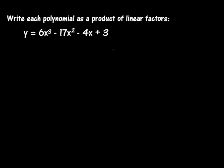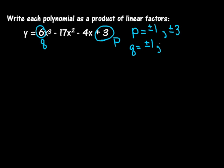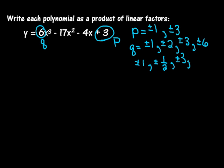Write each polynomial as a product of linear factors. So this is my P and this is my Q. P's factors are plus or minus one and plus or minus three. For Q, it's plus or minus one, plus or minus two, plus or minus three, and plus or minus six — all the factors of six. So my possible zeros are going to include fractions: plus or minus one, plus or minus one half, plus or minus three, plus or minus three halves, and so on. I'm going to use synthetic division to figure out which one of these is my zero.